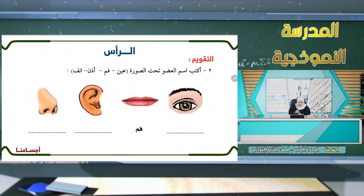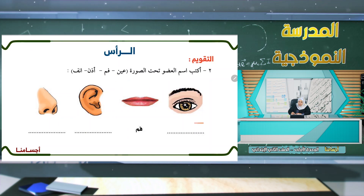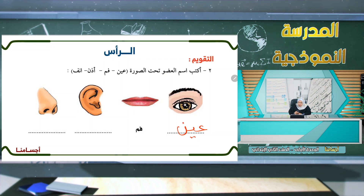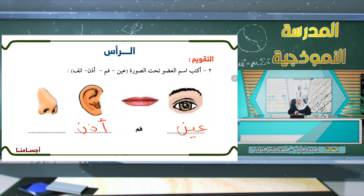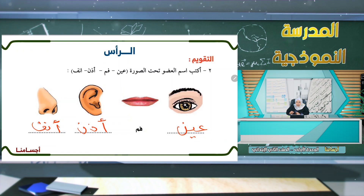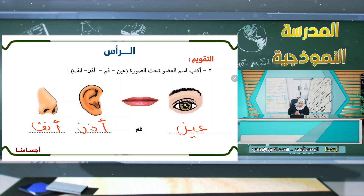نكمل التقويم: أكتب اسم العضو تحت الصورة. هذه عين، وهنا فم، وهنا أذن، وهنا أنف. إذن قمنا بكتابة كل عضو تحت صورته.